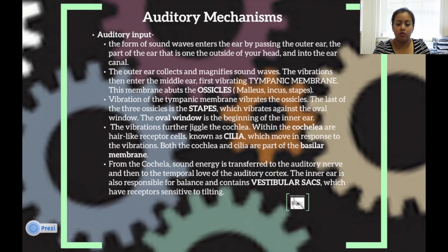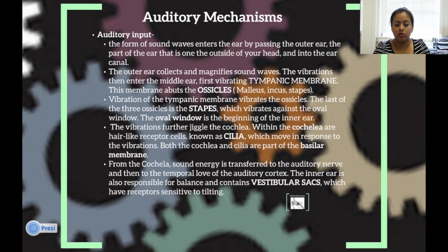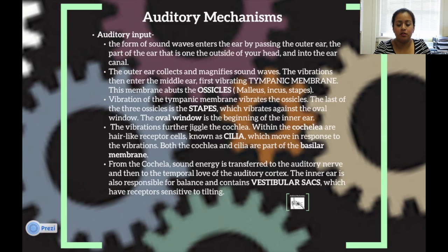Auditory mechanisms: auditory input in the form of sound waves enters the ear by passing the outer ear — the part of the ear that is outside of your head — and into the canal. The outer ear collects and magnifies sound waves. The vibrations that enter the middle ear first reach the tympanic membrane, which then vibrates the ossicles — the malleus, incus, and stapes. The last of the three ossicles is the stapes, which vibrates against the oval window — the beginning of the inner ear. The vibrations then jiggle the cochlea, which contains hair-like receptor cells known as cilia that move in response to the vibrations. Both the cochlea and cilia are part of the basilar membrane. From the cochlea, the sound energy is transformed to the auditory nerve and then to the temporal lobe's auditory cortex. The inner ear is also responsible for balance and contains vestibular sacs with receptors sensitive to tilting.